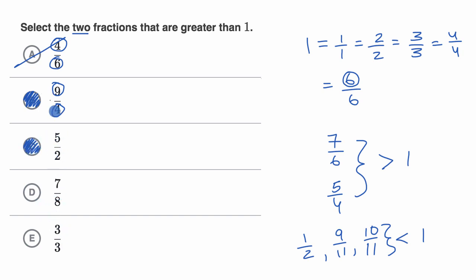And then, we already know we picked our two choices, but we can look at the other ones. Seven is less than eight. So seven eighths is less than eight eighths, so this is less than one. And three thirds, we've already talked about it, that's equal to one. So I like those two choices.